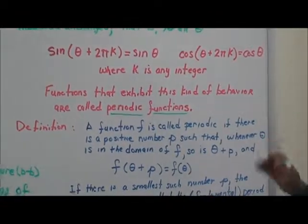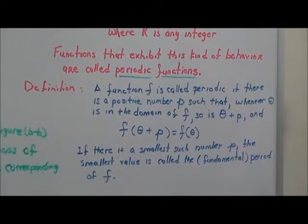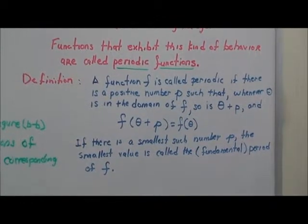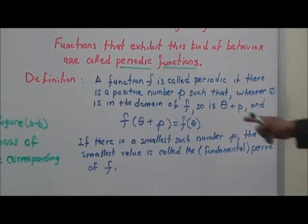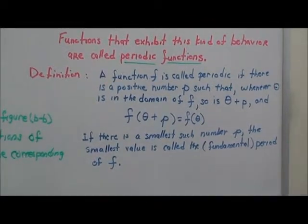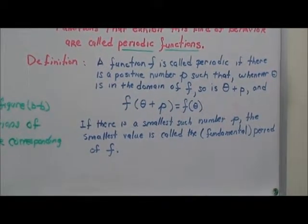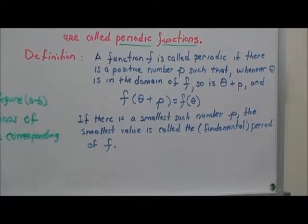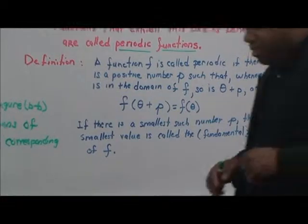By definition, a function f is called periodic if there is a positive number P such that whenever theta is in the domain of f, so is theta plus P, and f(theta + P) equals f(theta). If there is a smallest such number P, that smallest value is called the fundamental period of f.